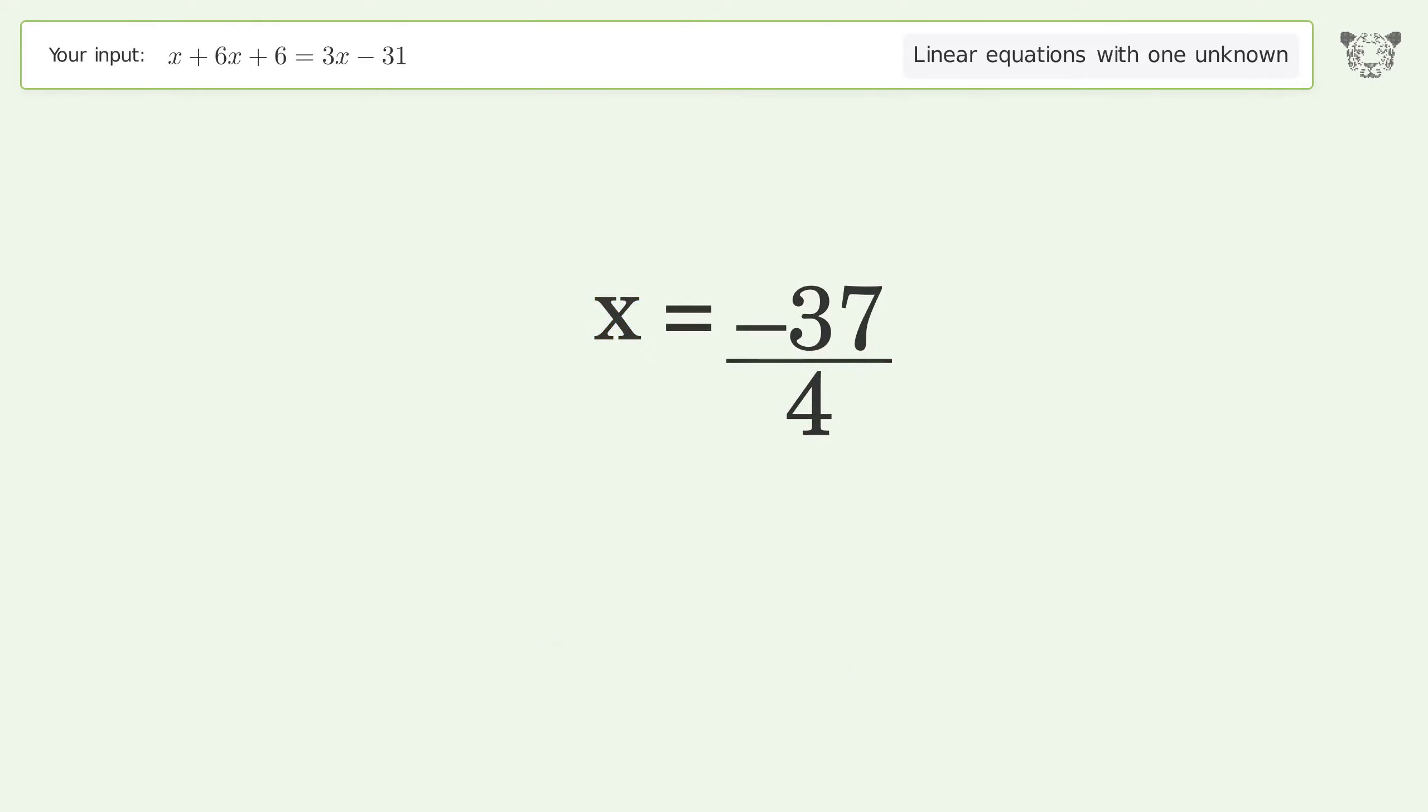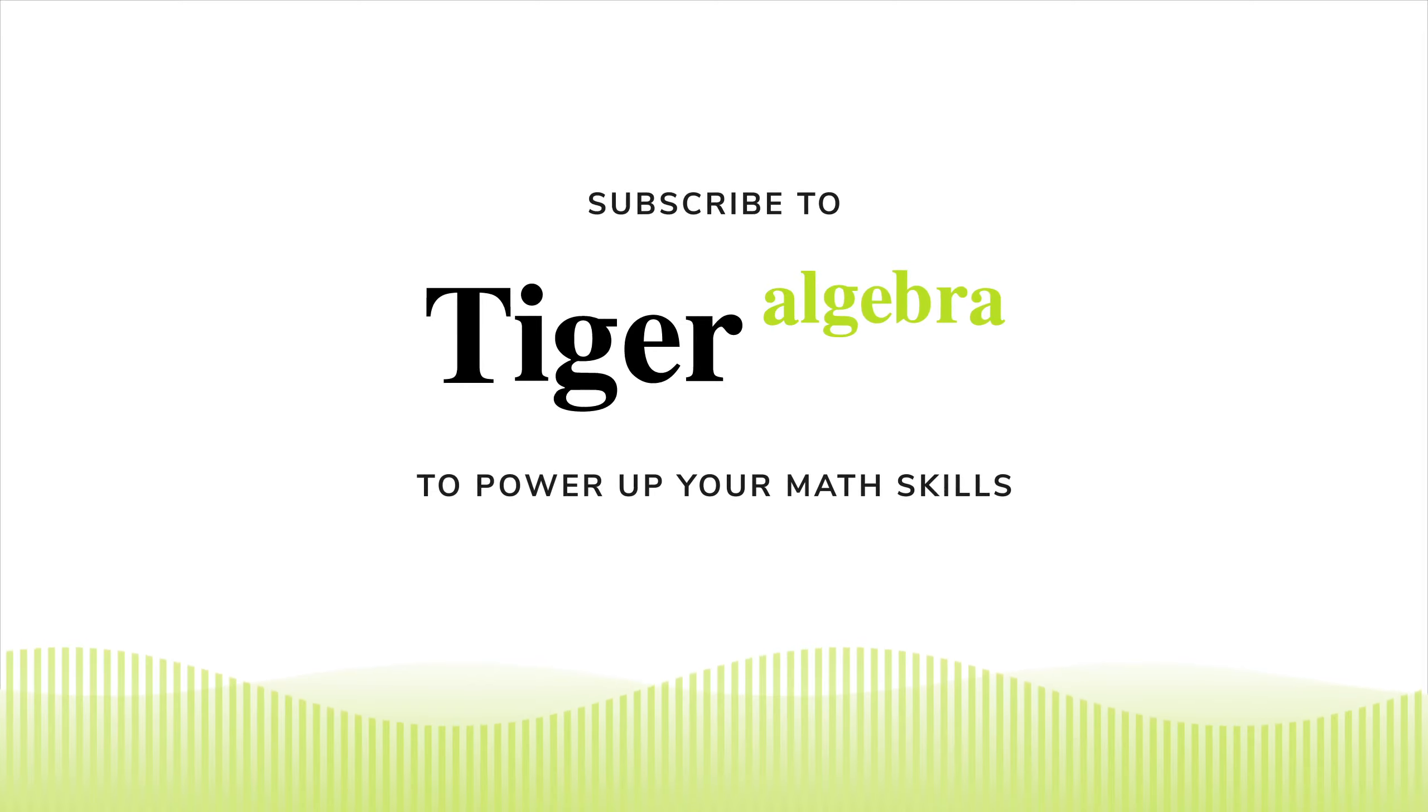And so the final result is x equals negative 37 over 4.